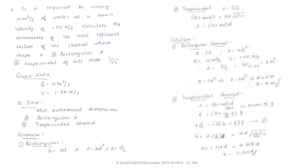I am going to read the question, listen carefully. It is required to convey 10 m³ per second of water at a mean velocity of 1.25 m per second. Calculate the dimensions of the most efficient section of a channel whose shape is rectangular and trapezoidal with side slope 1 by root 3.